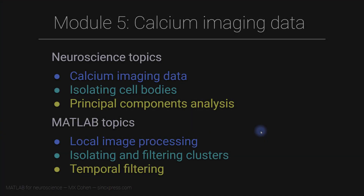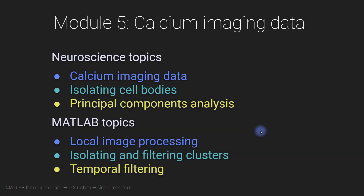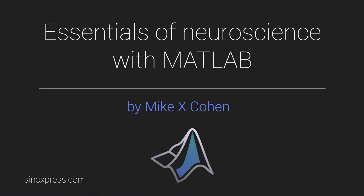If this were your own dataset, you would definitely want to look at this result, go back and adjust the algorithm to remove these artifacts, and try to additionally include some of the other cell bodies that were missed. That concludes module five of this course: you learned about calcium imaging data, a naive image processing algorithm to identify cell bodies, some pre-processing steps, and we closed off with a principal components analysis.